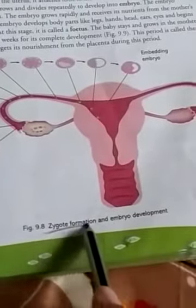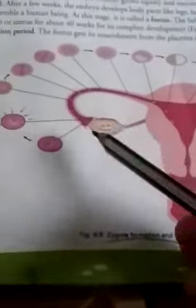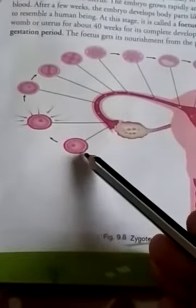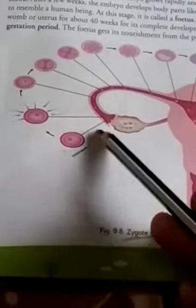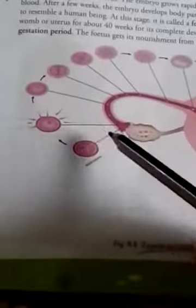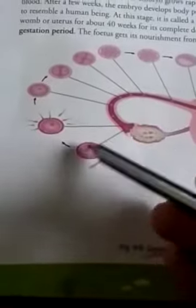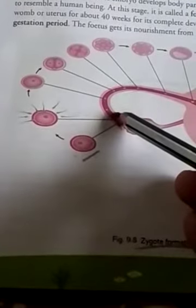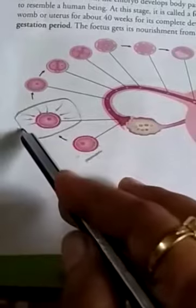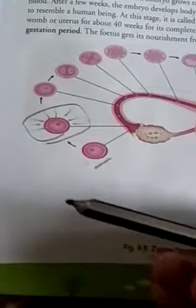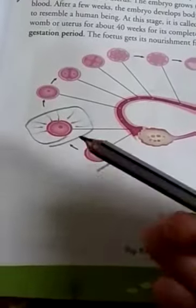Zygote formation and embryo development. If you are able to see this diagram, you can easily understand the events. First, you can see there is an egg which is released by the ovary. This is the fallopian tube, also known as the oviduct. After that, sperm is trying to attach to the egg.